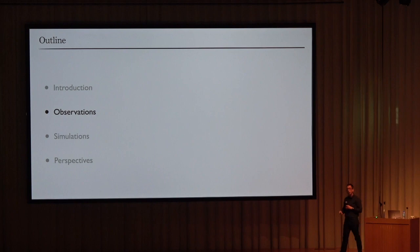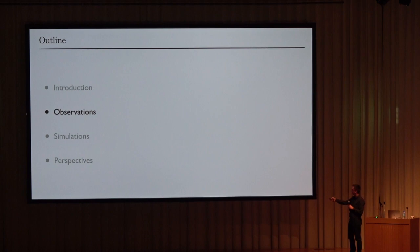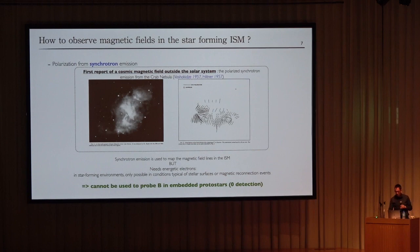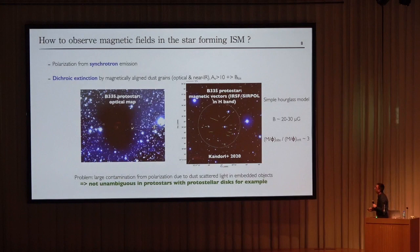Now let's review observational work done during the past 10 years. How do we measure magnetic fields? We could use synchrotron emission, but for embedded protostars we don't have energetic electrons, so there is no detection. We have to go to other techniques.